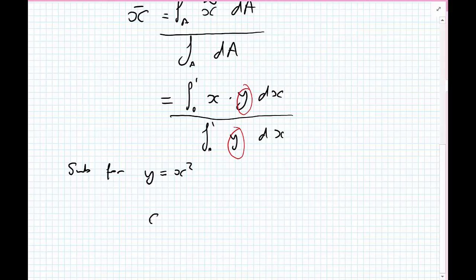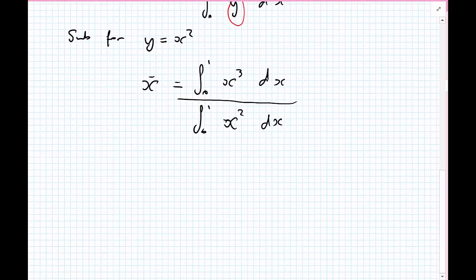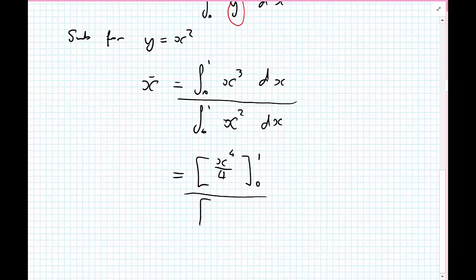We now get that x bar is equal to the integral between 0 and 1 of x cubed dx. From there we can carry out the integration. So we have x to the 4 divided by 4, and we'll carry out the definite integral between 0 and 1, divided by x to the power 3 divided by 3, again between the limits of 0 and 1. This equals, when we carry out the definite integral, 1 quarter divided by 1 third.